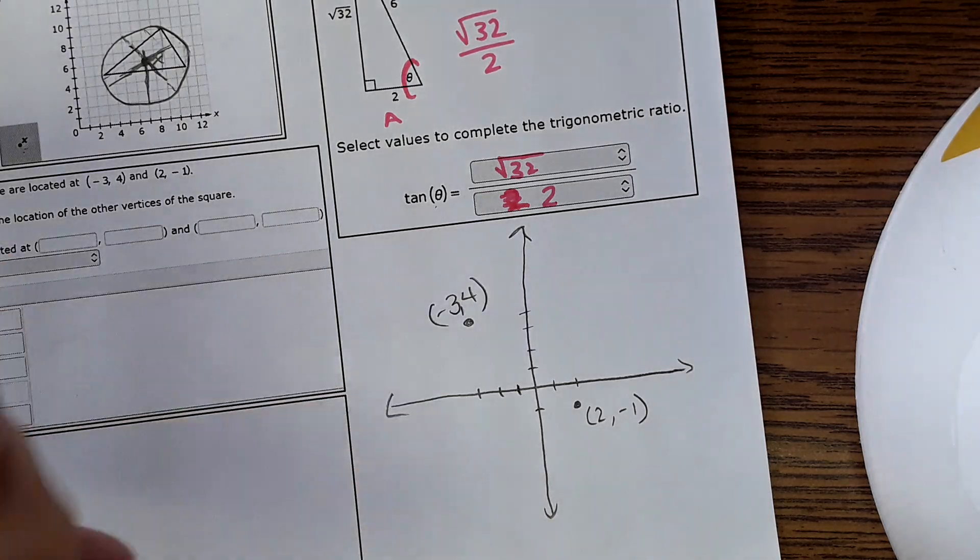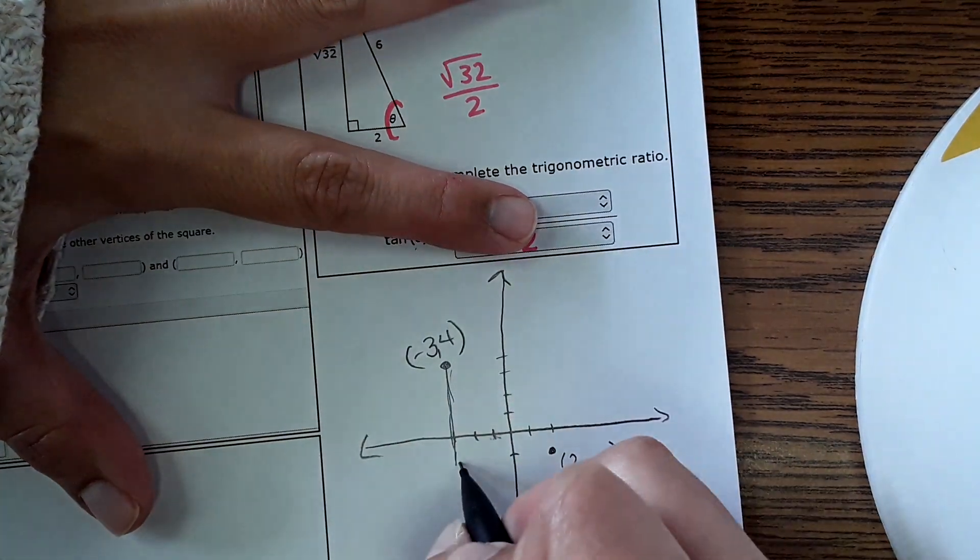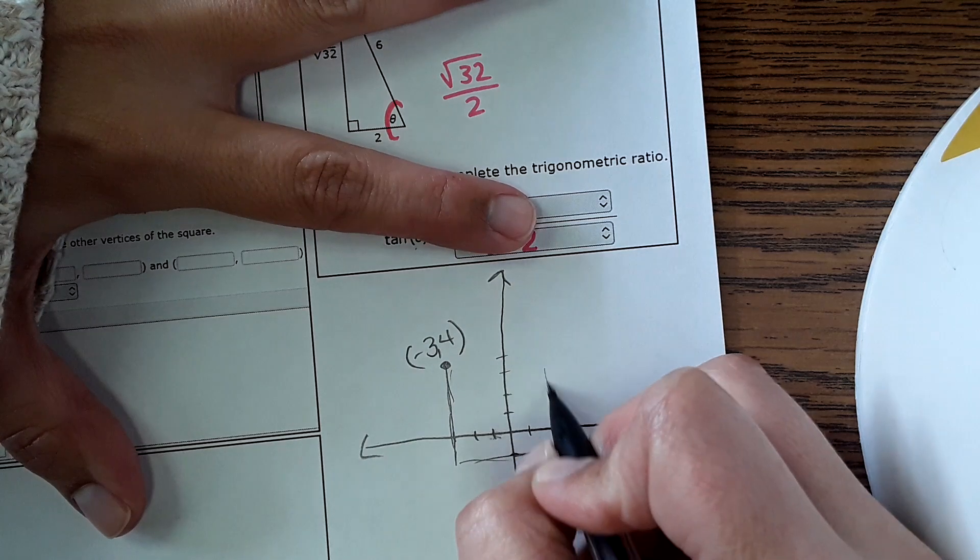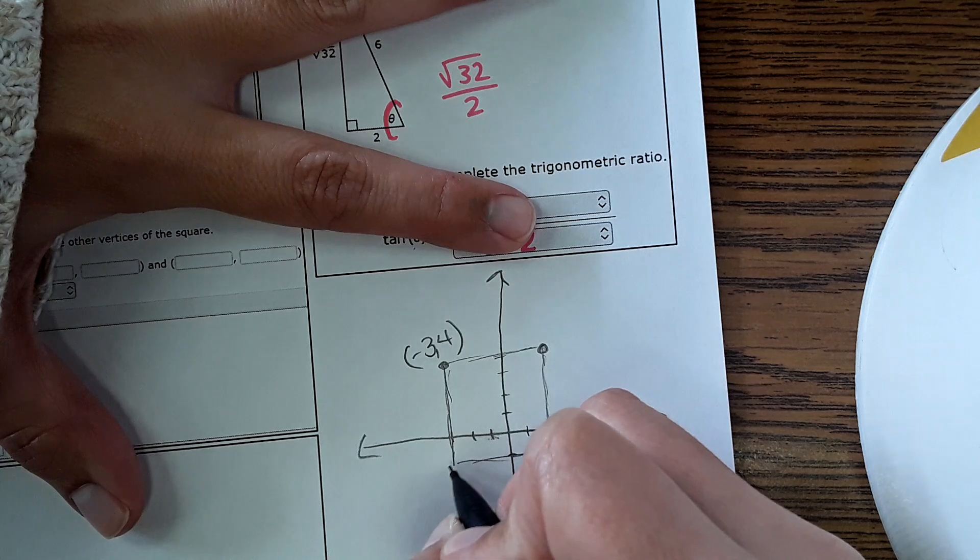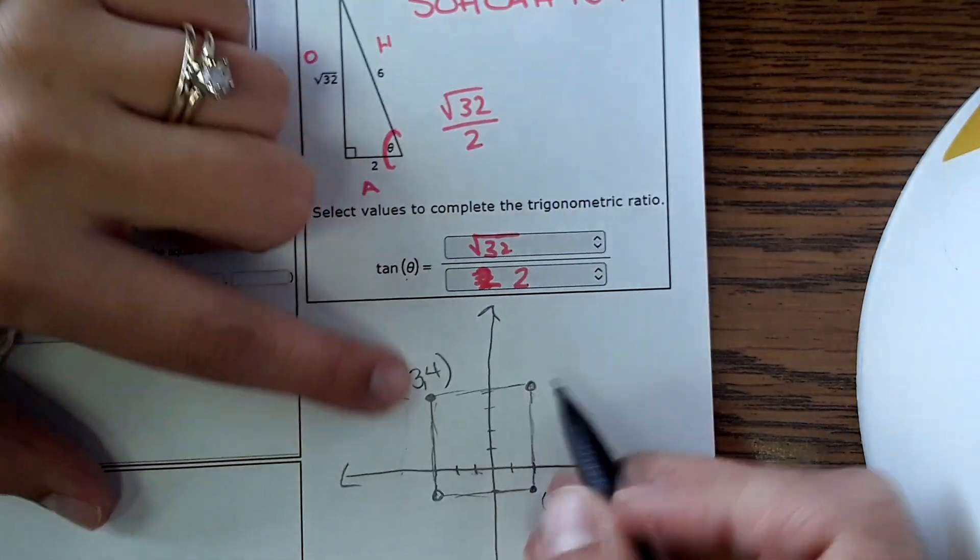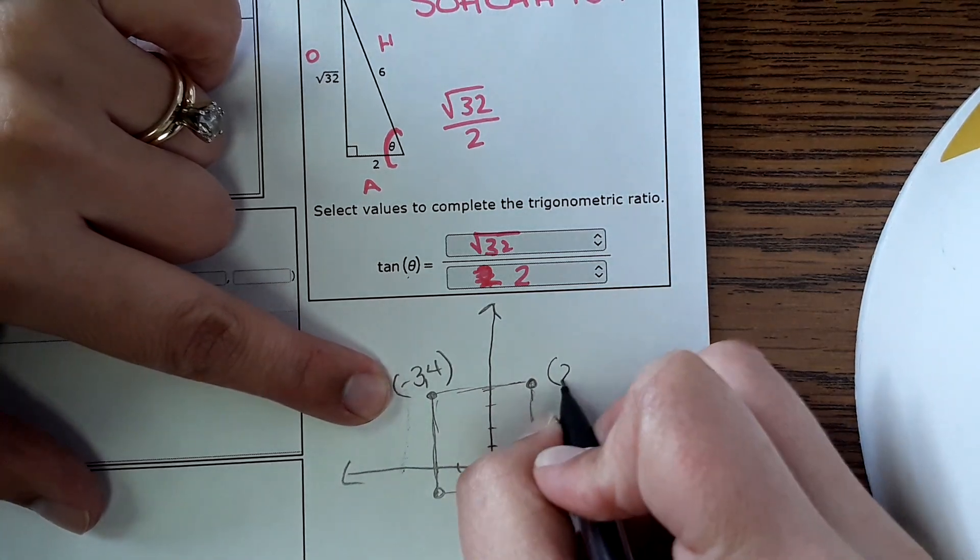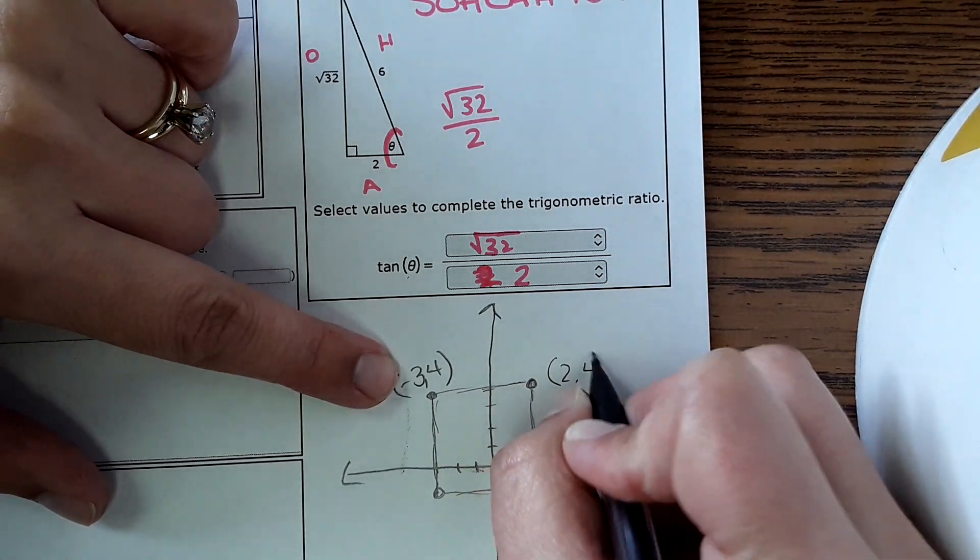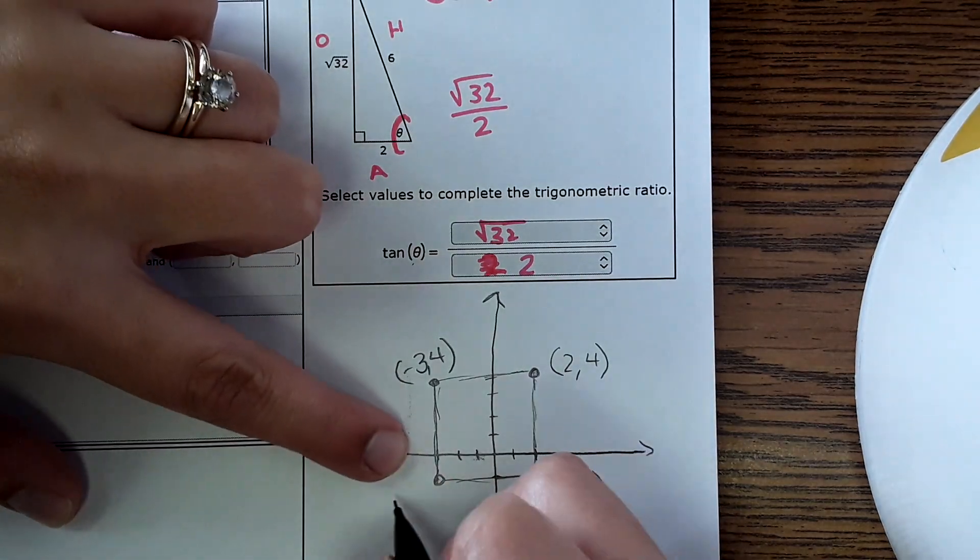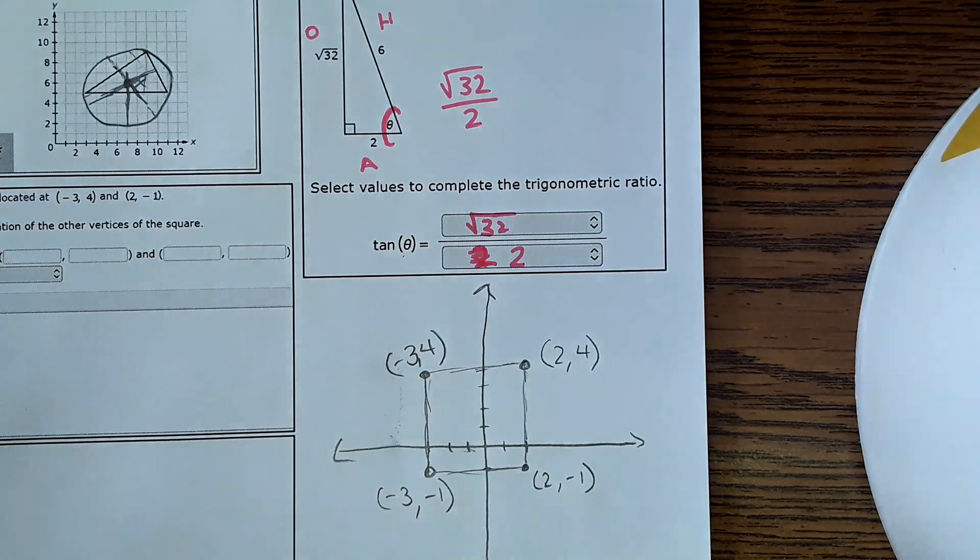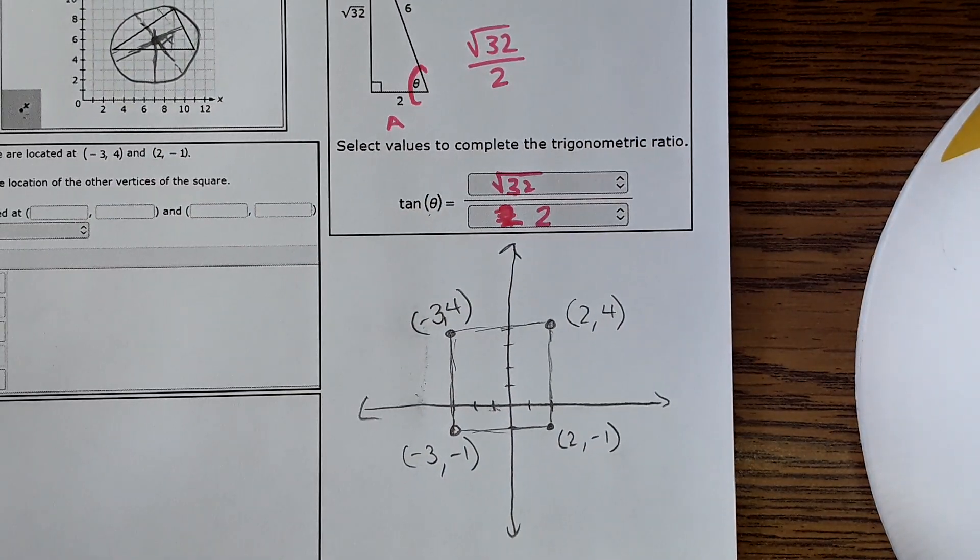So here's two points. Now we're going to sketch out a square and find out what the other two points are. So if I was to sketch out a square right here. You need to know what these coordinates are. Well, this one would be at 2, 4. And then these points would be at negative 3, negative 1.